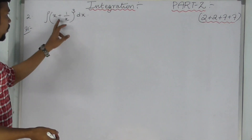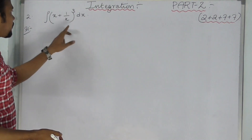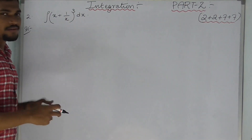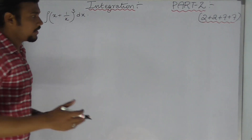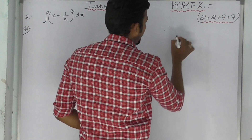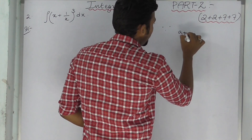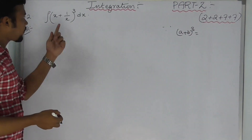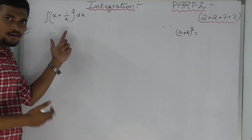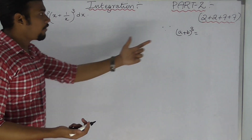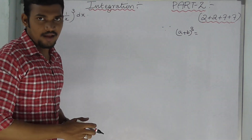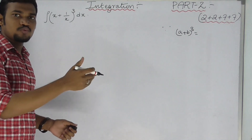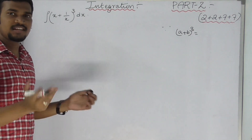What is the formula? We need to expand using A, B, Q — that is, algebraic identities. Let's expand. We will use the formula to expand first, then integrate.